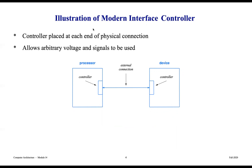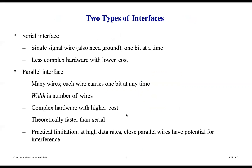Here's an illustration of a modern interface controller. The controller is placed at each end of a physical connection and allows arbitrary voltage and signals to be used. Here's a processor with controls that have a conduit for input and output relaying of information to the device — this is the I/O plane you're thinking about.